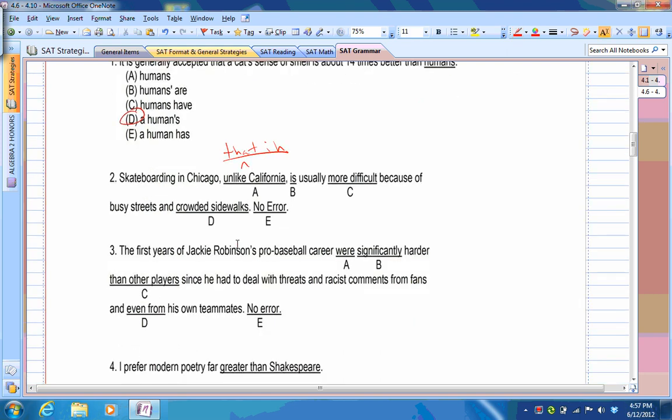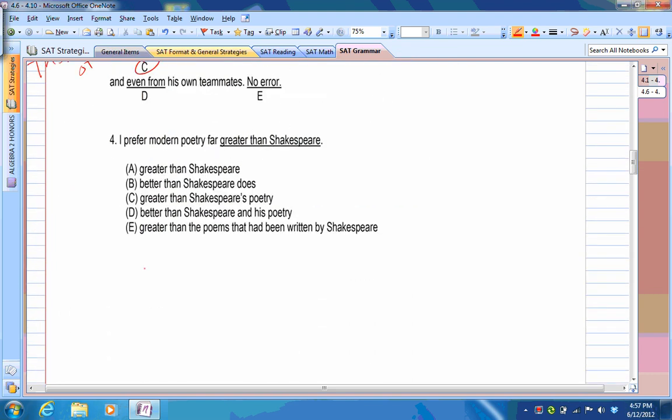Let's look at number three. The first years of Jackie Robinson's pro baseball career were significantly harder than other players, since he had to deal with threats and racist comments from fans and even from his own teammates. So you want to compare the first years of Jackie Robinson's career to the first years of other players' careers. So then those of. And you've got to use those, not that, because years is obviously plural and those is plural. Or you could say then the first years of other players. So that would be C. And again, number two is A. So you have A and C for two and three.